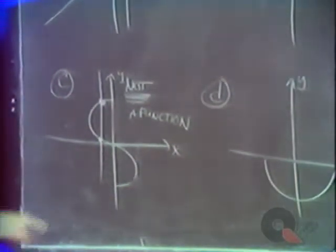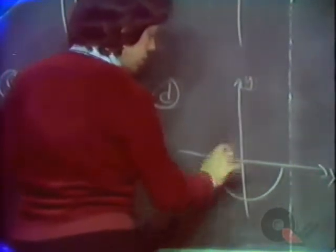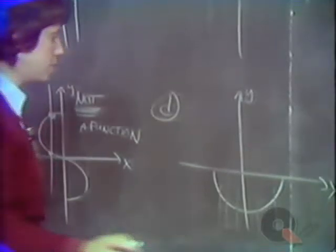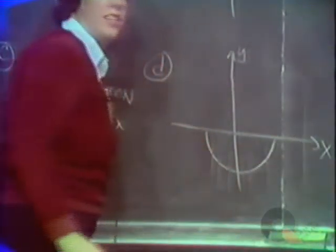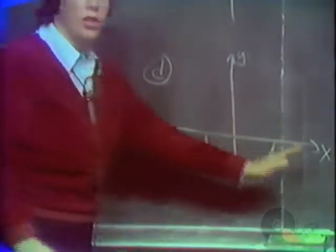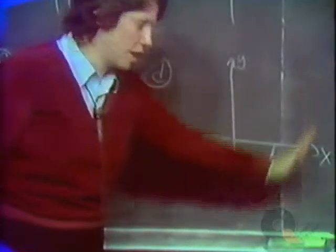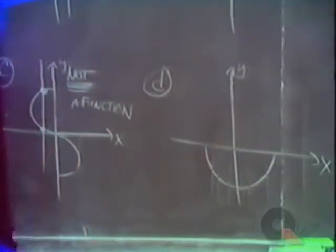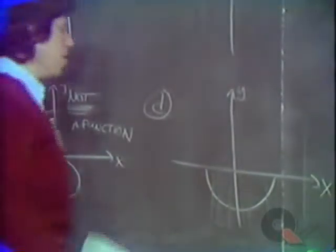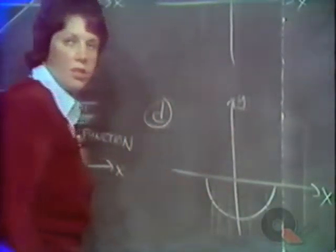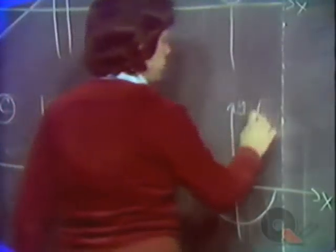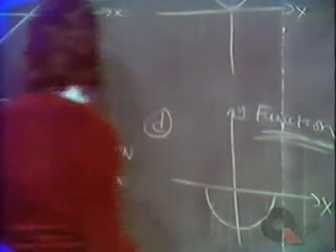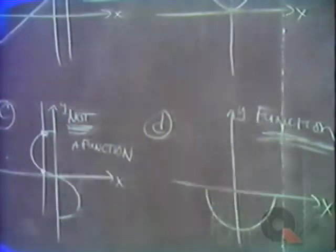Finally, in D, every vertical line drawn through the domain cuts it exactly once. Don't be upset if outside the domain a vertical line doesn't cut it at all — it just means that's outside the domain, so it doesn't matter. As long as no vertical line in the domain cuts it more than once, this is a function. So only C was not the graph of a function.